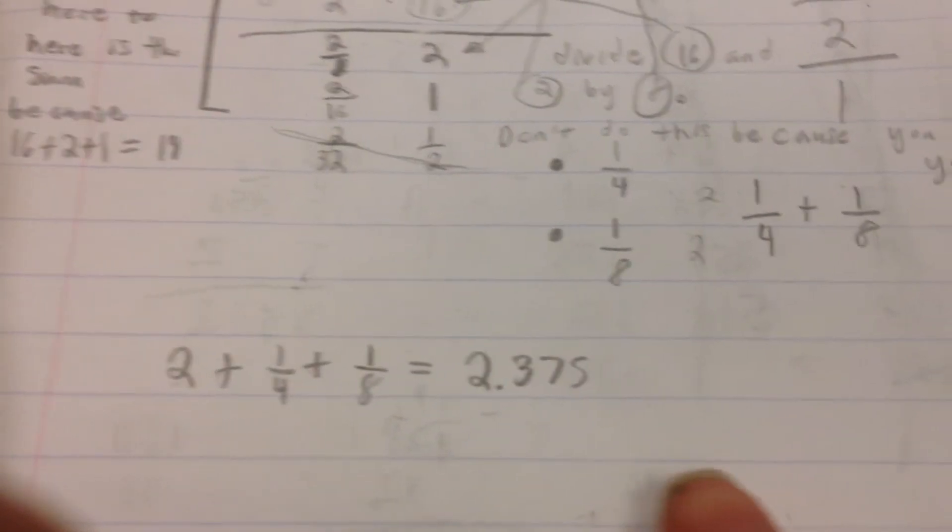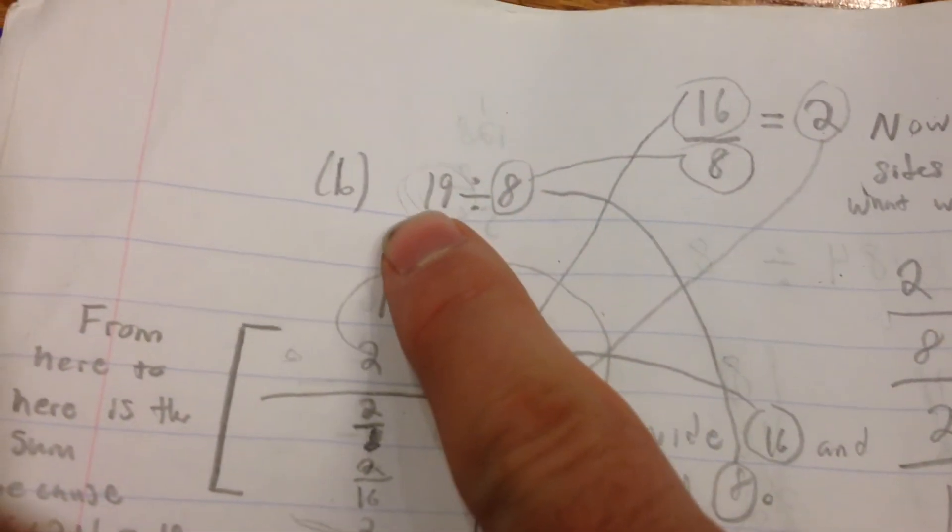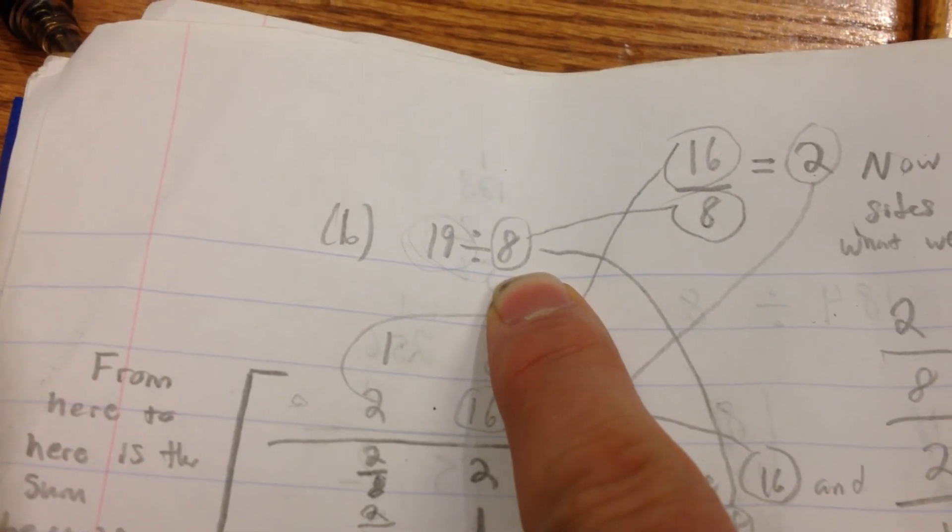And then this is going to be 2.375, which, if you check with your calculator, is 19 divided by 8. Aren't you glad we use the numeral system we do today?